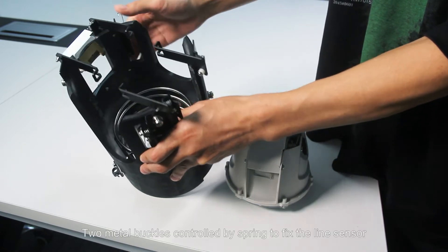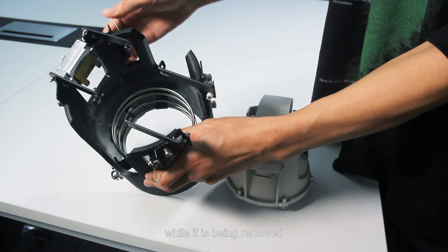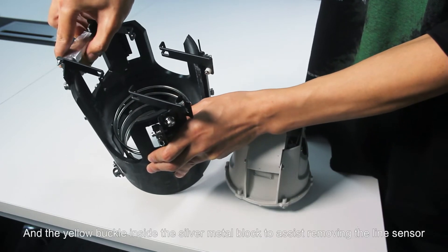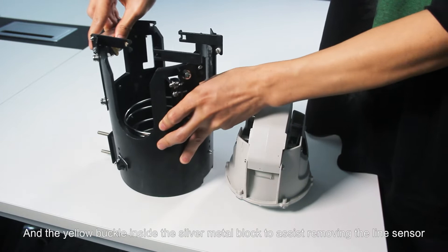Two metal buckles controlled by spring to fix the line sensor while it is being removed and the yellow buckle inside the silver metal block to assist removing the line sensor.